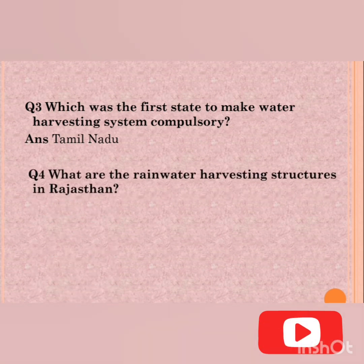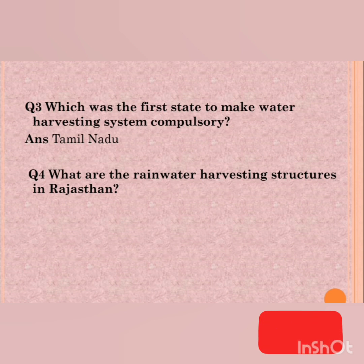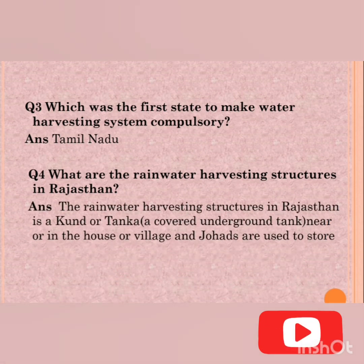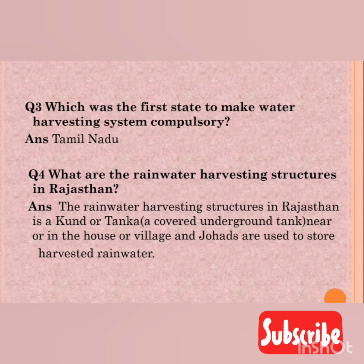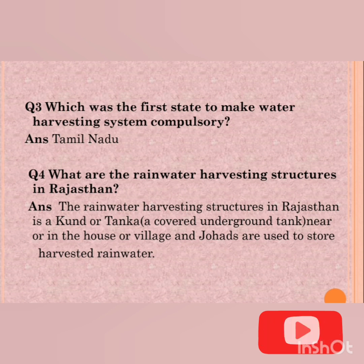Question number four: what are the rainwater harvesting structures in Rajasthan? (Rajasthan mein rainwater harvesting ke sarancha ke saadhan kaun kaun se hain?) The answer is: a kund or tanka — a covered underground tank near or in the house or village — and johad, used to store harvested rainwater. Sabse zyada yahan kund, tanka aur johad se hi hum water store kar sakte hain.